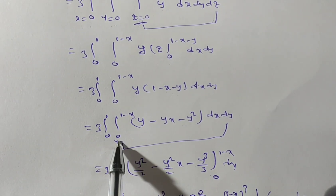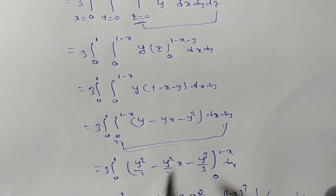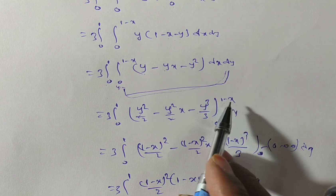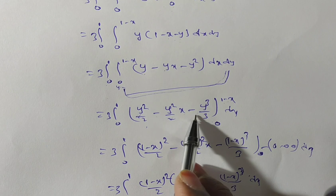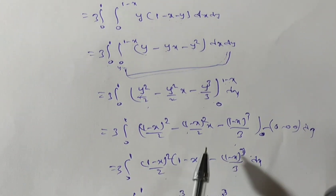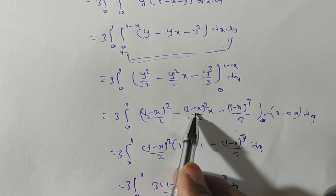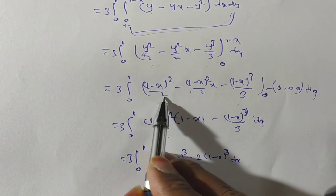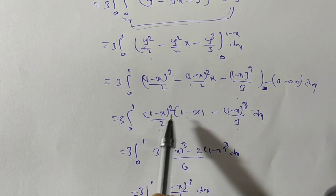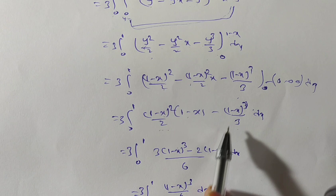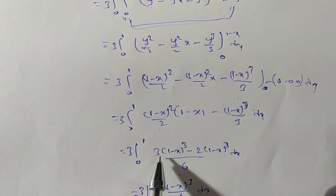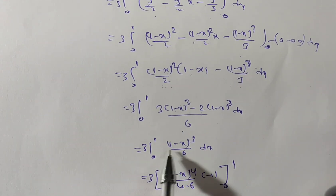Now integrate with respect to y from 0 to 1 − x. Integrating y − xy − y²: we get y²/2 − xy²/2 − y³/3. Substituting upper limit 1 − x: (1−x)²/2 − x(1−x)²/2 − (1−x)³/3. The lower limit gives 0. Taking (1−x)² common from the first two terms with denominator 2: (1−x)²(1−x)/2 = (1−x)³/2. So we have (1−x)³/2 − (1−x)³/3. With LCM 6: [3(1−x)³ − 2(1−x)³]/6 = (1−x)³/6.